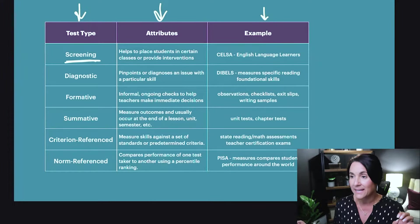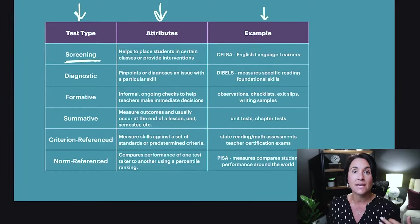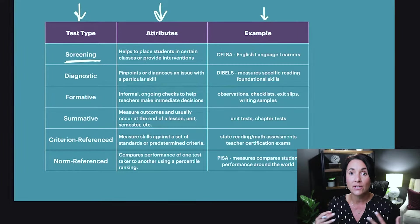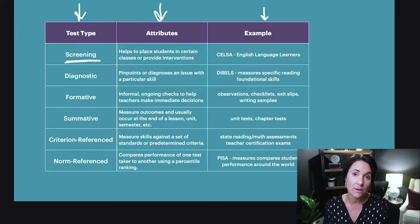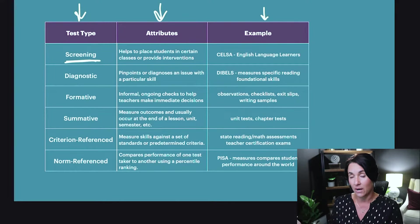The first type of assessment is the screening. Screening usually happens at the beginning of the year or when a student enters the school. You're giving them an overarching assessment, measuring their overarching skills, and using those outcomes to place the student somewhere. For example, if a student comes in from another state and the records haven't arrived, you might do a screening to figure out where to place the student — whether in honors or an intervention class.